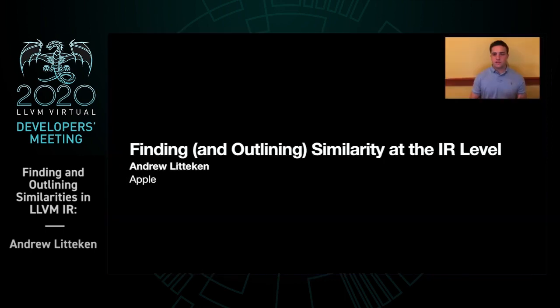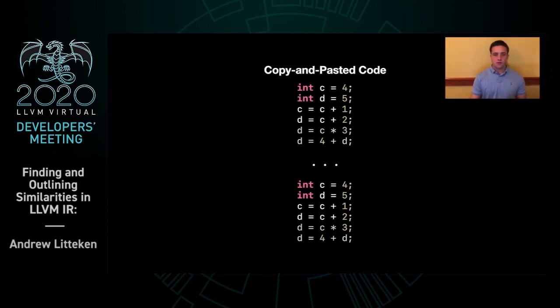Hi, I'm Andrew Lidekin, and I'm going to be talking about finding and outlining similarity at the IR level. We all write similar code, whether we intend to or not, whether it's copy-pasted code or rewriting the same section but just changing the variables around. But what about code like this?